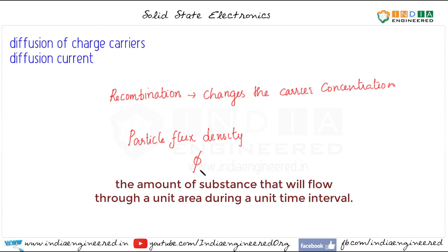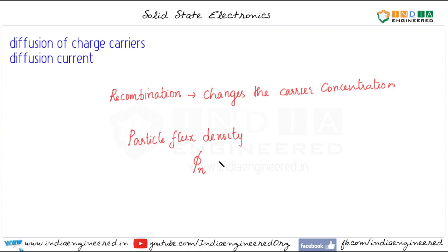For electrons let's use phi_n. The particle flux density phi_n of free electrons is proportional to the concentration gradient, that is proportional to dn/dx. Because of how this derivative is defined we will have a minus sign, we will discuss it later. The proportionality constant here is D_n, the diffusion coefficient.